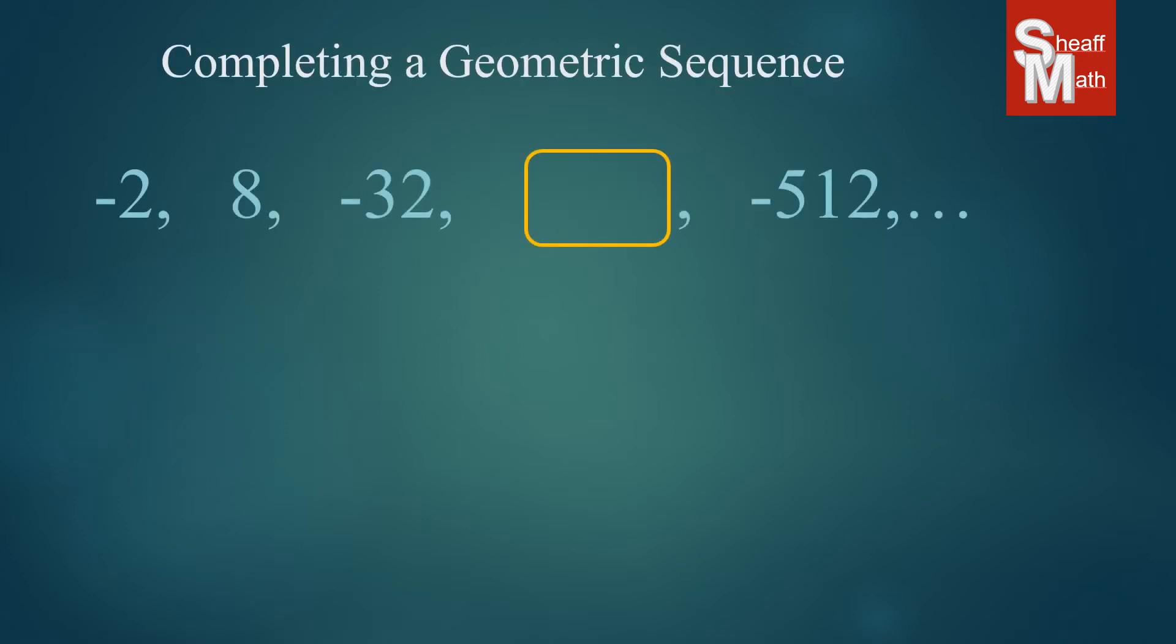All right, here's another example. So this one is a unique one. It's going negative, positive, negative, blank, negative. And so what we're going to do is now remember every geometric sequence has the same ratio. So we'll just pick two numbers to find that ratio.